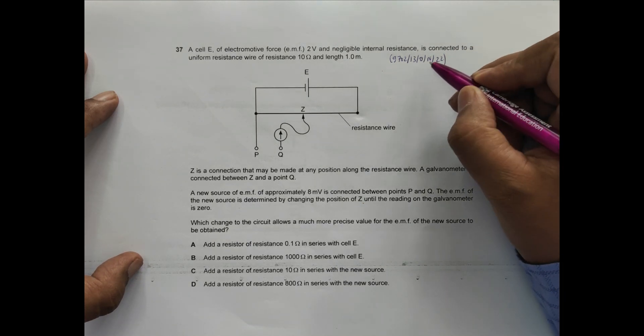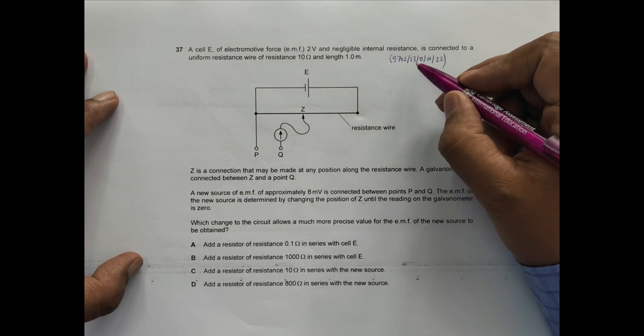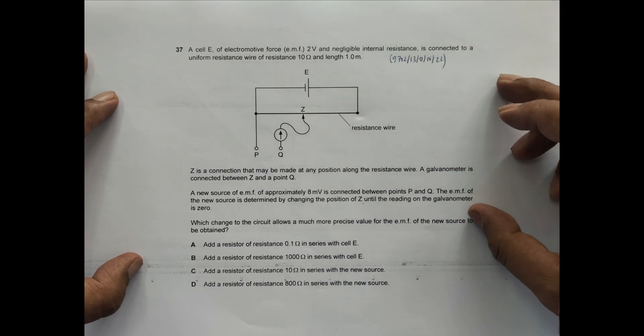Hello folks, this is your 2022 October-November paper question number 37. This question is concerned with the chapter on current electricity.